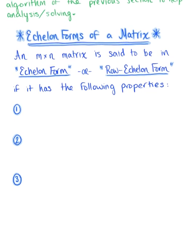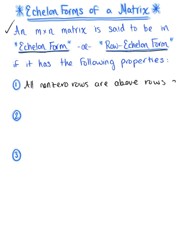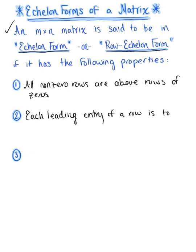To get us started, I want to talk about echelon form of a matrix. An M by N matrix is said to be in echelon form, or row echelon form — they mean the same thing — if it has the following properties. The first property is that all nonzero rows are above rows of zeros. The second property is that each leading entry of a row is to the right of the leading entry above it.